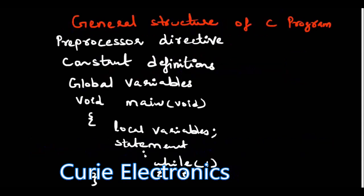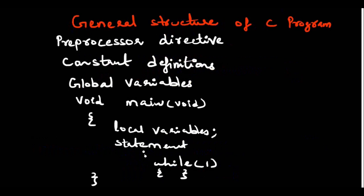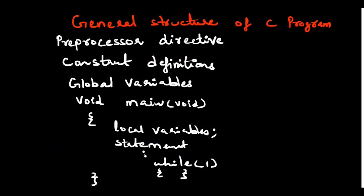Before that, let's see the general structure of a C program that we learned in the first video. First we mention the preprocessor directives. For learning embedded C we will follow the 8051 microcontroller. Preprocessor directives means we write a sentence like hash include, and that hash symbol is the preprocessor directives symbol. We write reg51.h — that is the header file.